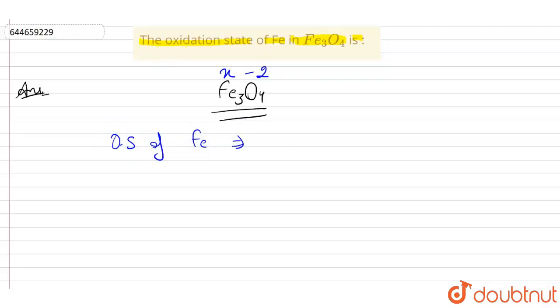Therefore, the oxidation state of Fe will be x times the number of iron atoms, that is 3, plus the charge on oxygen, that is minus 2, times the number of oxygen atoms, that is 4, equals the overall charge on this compound, which is 0.